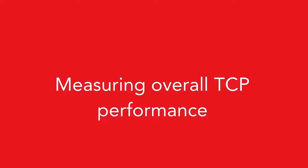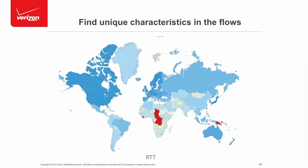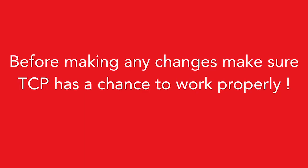One of the messages relayed at Velocity by many speakers is that before making changes, let's make sure we measure correctly. Our chief architect, Rob Peters, was here at Velocity last year and explained how we measure TCP performance at a global scale. Basically, we capture the socket info at the end of the connection, log that, and look at the global behavior of TCP. Now that we record this, let's make sure we actually give TCP a simple chance to work the way it's supposed to work.